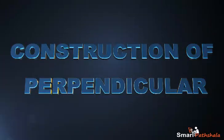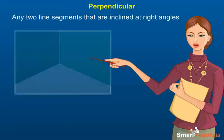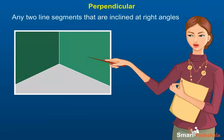Construction of Perpendicular. This module will explain construction of a perpendicular. Any two line segments that are inclined at right angles are called perpendiculars.